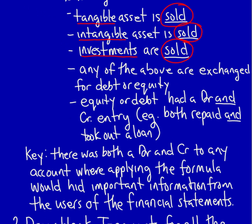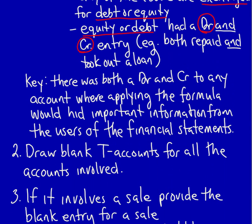If any of the above — intangibles, tangibles, or investments — have been exchanged for debt or equity, such as purchasing equipment in exchange for common shares, a T-account proof is required. Finally, if equity or debt has had both a debit and a credit — for example, a loan was repaid (debit to loan payable) and a new loan was taken out (credit to loan payable) — taking the net of those two amounts hides important information from the users of the financial statements so they can't make informed decisions.